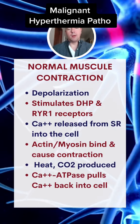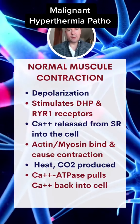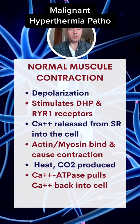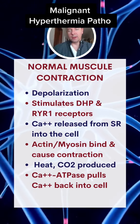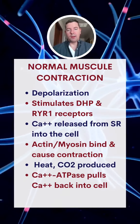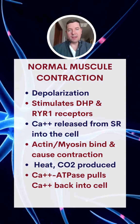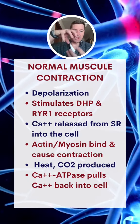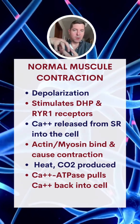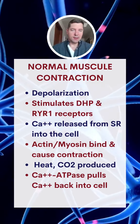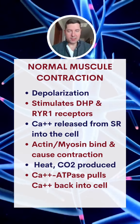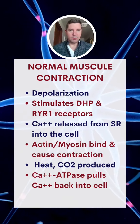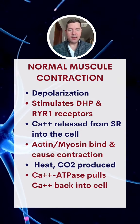Hey guys, I wanted to do a quick update on malignant hyperthermia and its pathophysiology. Let's jump into normal muscular contraction and see what it looks like. We have a depolarization of the muscle that goes to stimulate the DHP and RYR1 receptor — basically two receptors that touch one another at the border of the sarcoplasmic reticulum and the rest of the interior of the muscle cell itself.